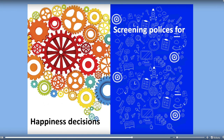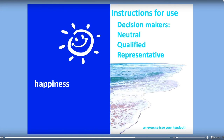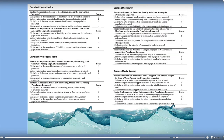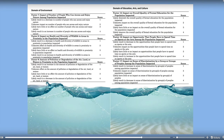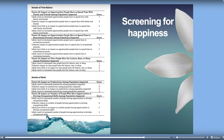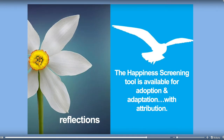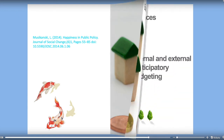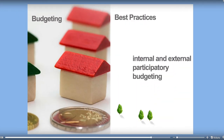Let's talk about some of the ways happiness data can be used. We can use it to inform what kinds of policies we want to make — we have a policy screening tool you can access through a published article. This is based on Bhutan's Gross National Happiness Index, which has its own screening tool, and with their permission we created a version you can use. You can learn how to use it in the Happiness Policy Handbook and in a publication at happycounts.org.